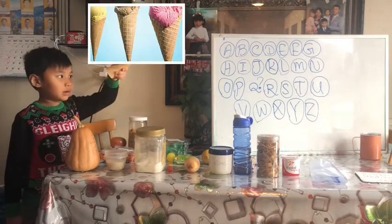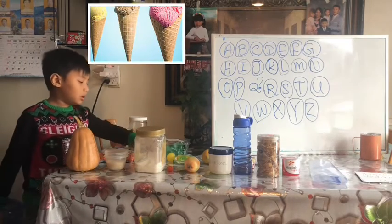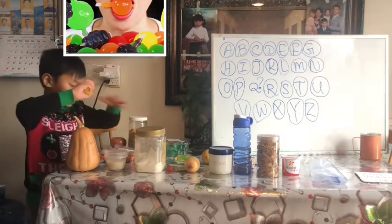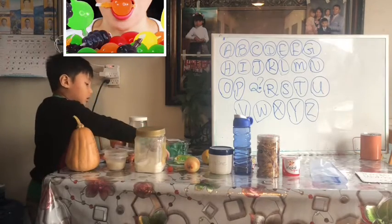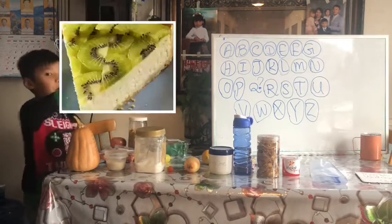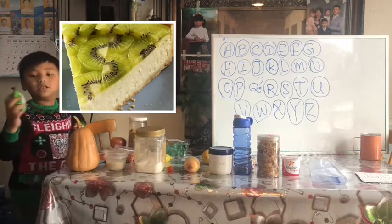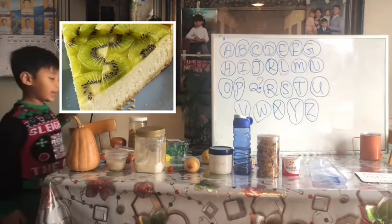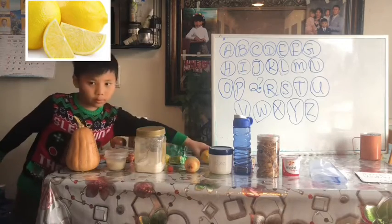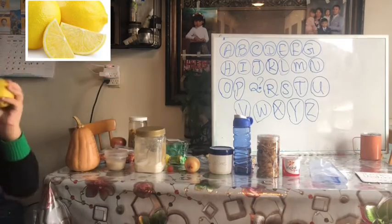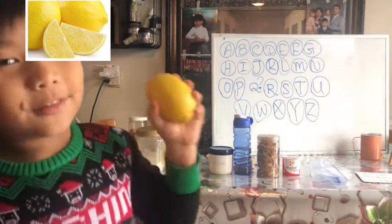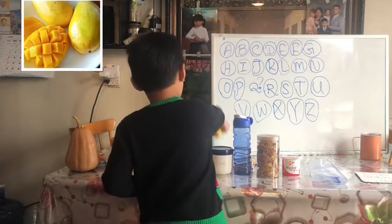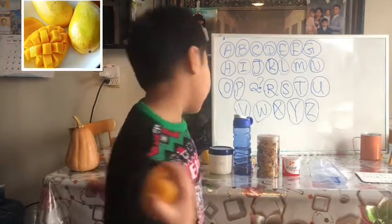I is for ice cream, J is for jelly, K is for kiwi cake, L is for lemon, M is for mango.